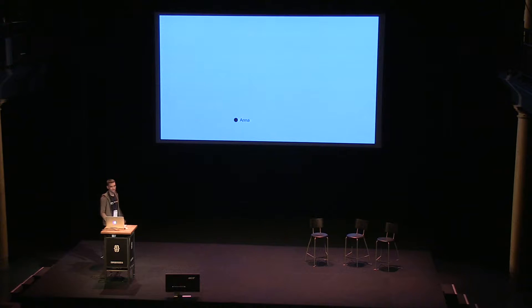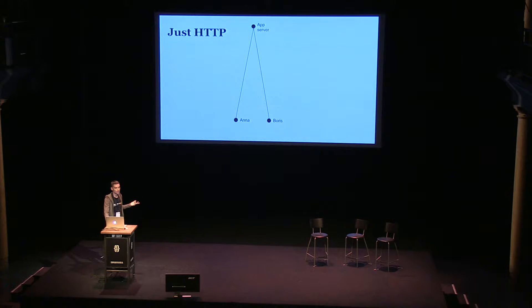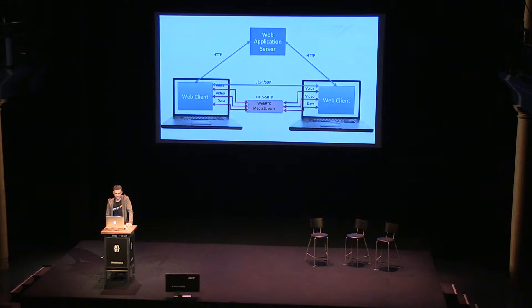Let's go over what peer-to-peer is. Let's assume we have Anna, a user living on the same block as Boris. Anna and Boris want to use the same application to communicate and send information to each other. They live on the same block, but there's a server in San Francisco — or Berlin. To exchange information, they need to go to the server, say "hey server, please send this to Boris," and then back to Anna. That means the round trip is going to be thousands of kilometers. P2P means they can exchange information directly, bypassing the server — a big improvement.